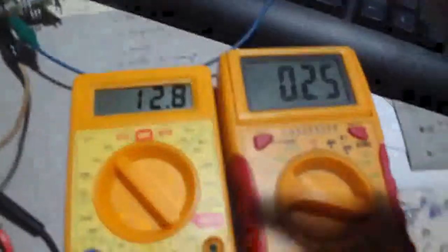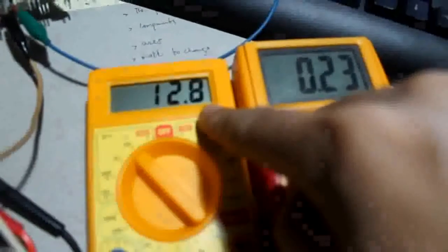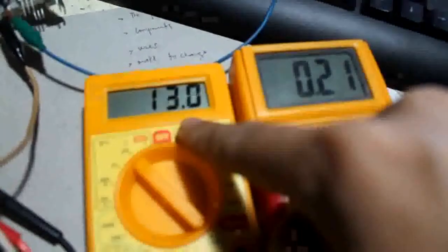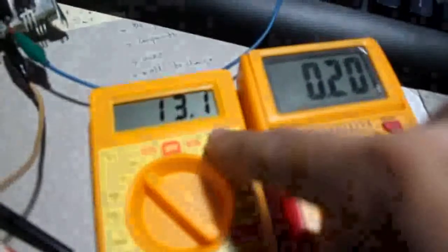So as we connect it we can see that the voltage here changes from 22 volts to 13 volts same as the voltage of the battery which is 12 volts. So there you can see 12.8, 13 is changing and it's drawing power now.